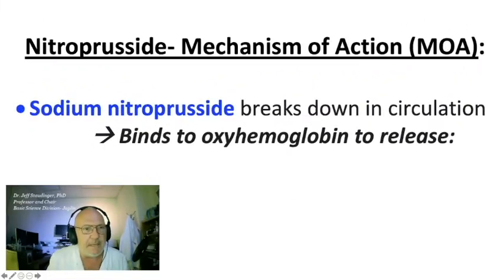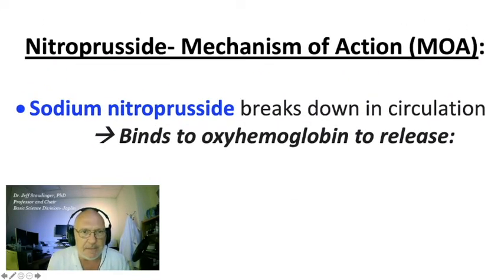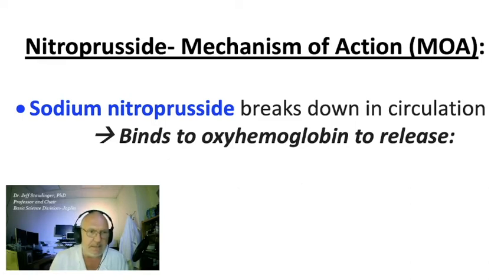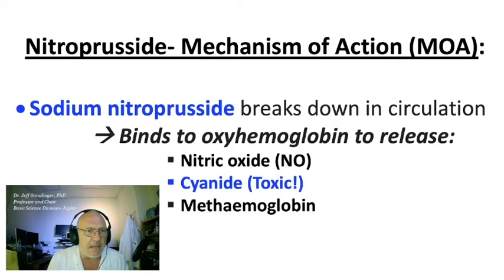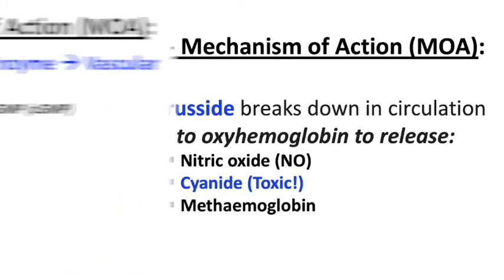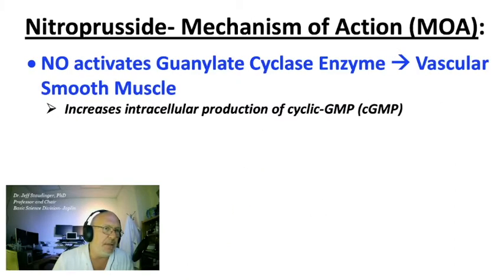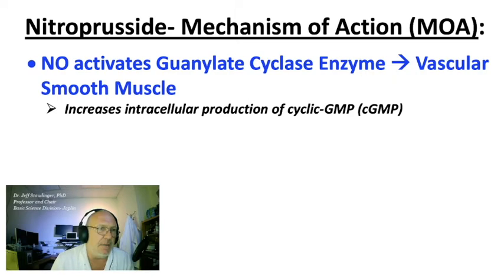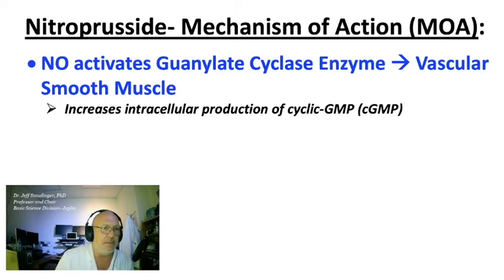With respect to mechanism of action, sodium nitroprusside breaks down in circulation. It binds to oxyhemoglobin to release nitric oxide, cyanide — which is toxic — and methemoglobin. Upon administration, nitroprusside produces nitric oxide, which activates guanylate cyclase enzymes in vascular smooth muscle.